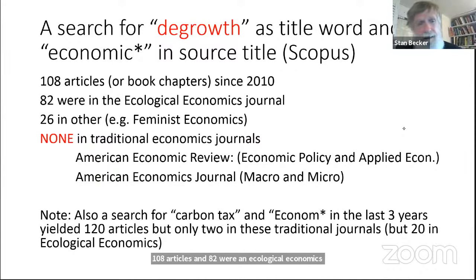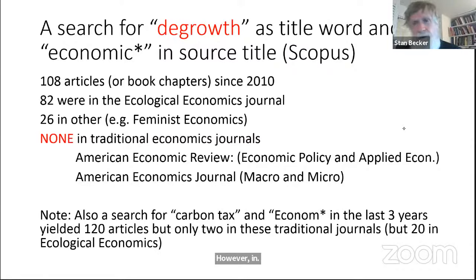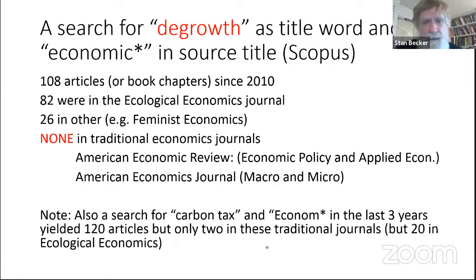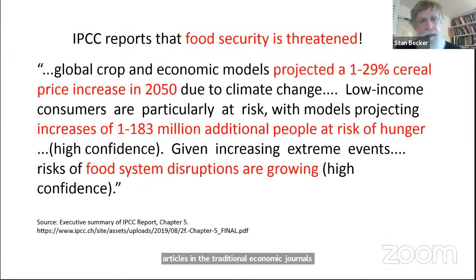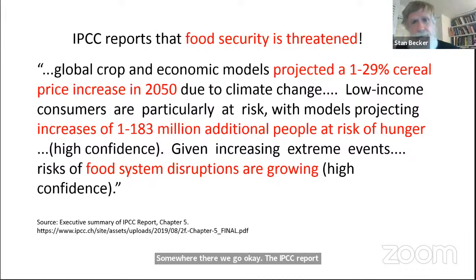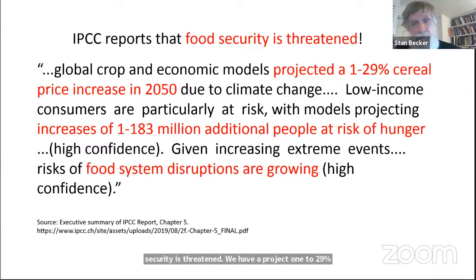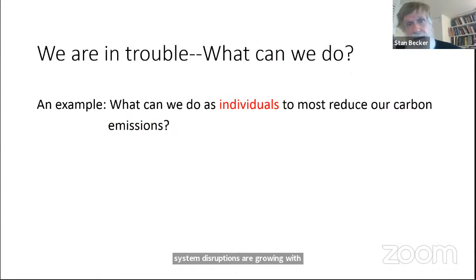How do we go from 8 billion persons today to 2 or 3 billion without a population crash? Degrowth is the answer — basically a reduction of energy and resource throughput. I searched for 'degrowth' in economic journals: 108 articles appeared, and 82 were in the Ecological Economics Journal. In traditional economic journals — the American Economic Review and others — there were zero. Ecological economics people are very concerned, but traditional economists appear not to be. I also did a search on carbon tax, and similarly there were only two articles in traditional economic journals.